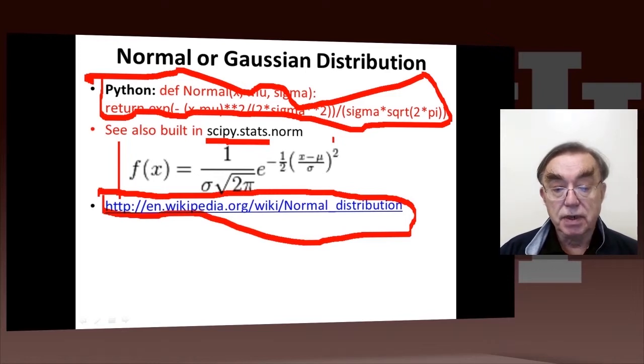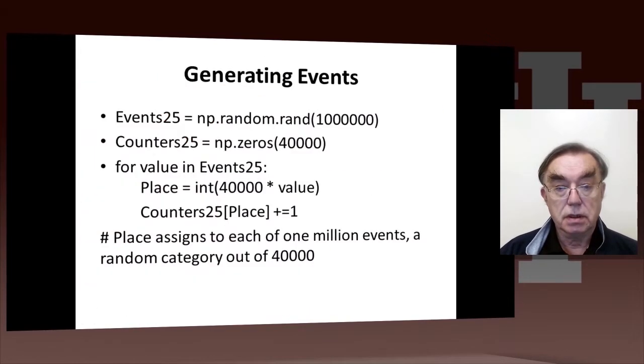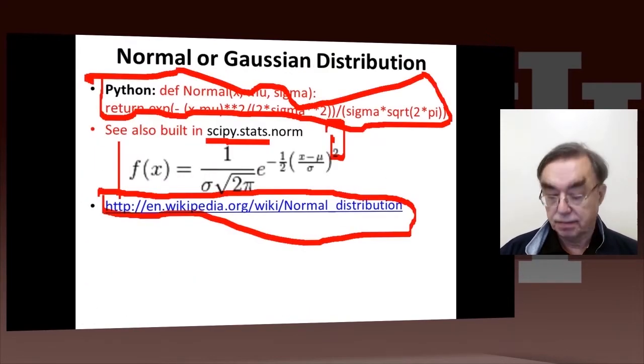f of x is 1 over sigma square root of 2π times exponential with x minus μ raised to the second power and the minus 1 half. And that was not meant to go forward there. I apologize.